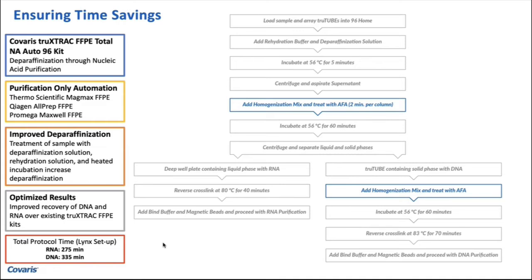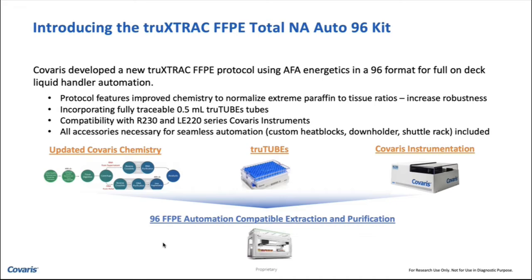This is our True Extract FFPE Total Nucleic Acid R296 kit — total nucleic acid because it covers both DNA and RNA. The whole workflow and all consumables are provided. The instrument used is an R230 or LE220 series, compatible with any liquid handler. If using automation, we can support that; if running manually, we provide guidelines for that as well.